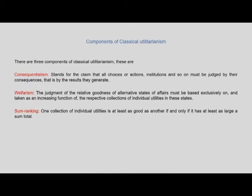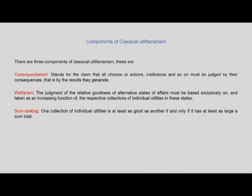Let us look at some of the components of classical utilitarianism. There have been various extensions of the concept, but here we consider only classical utilitarianism. It has primarily three components: consequentialism, welfarism, and sum ranking.